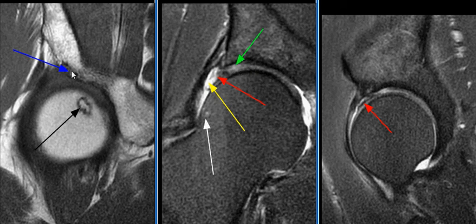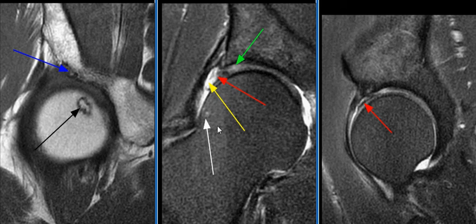The acetabulum is mildly dysplastic. There is asphericity of the femoral head-neck junction, along with mild fibrocystic change in the lateral femoral head near the head-neck junction, compatible with femoroacetabular impingement.